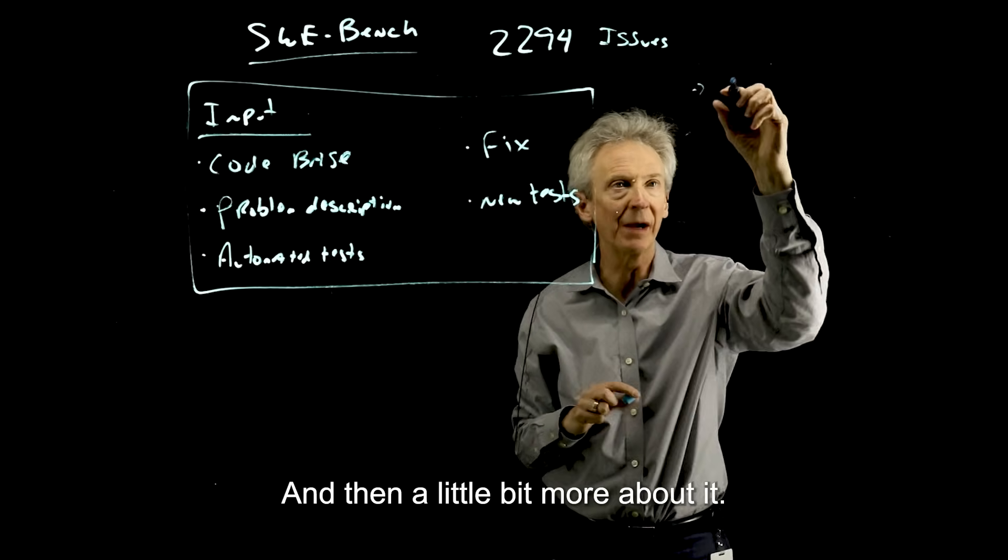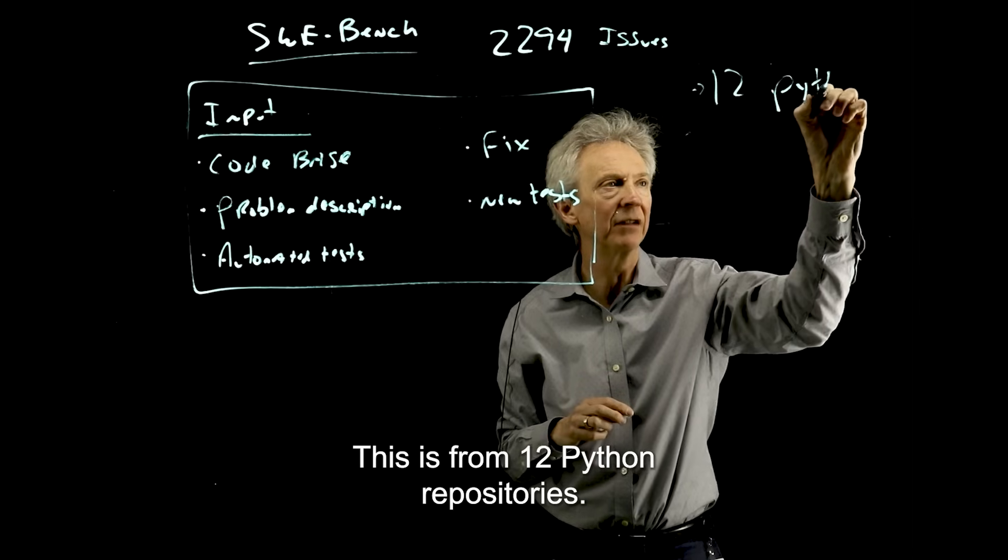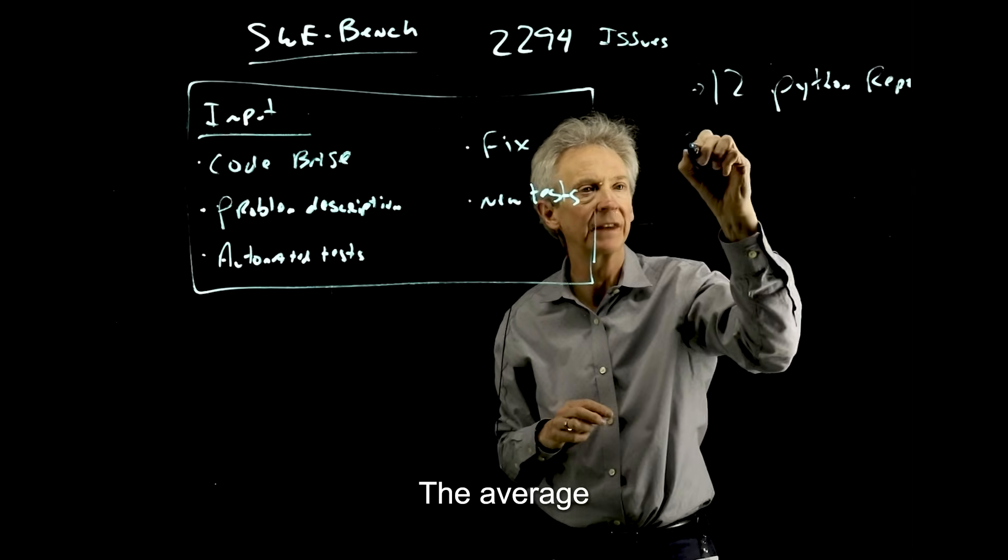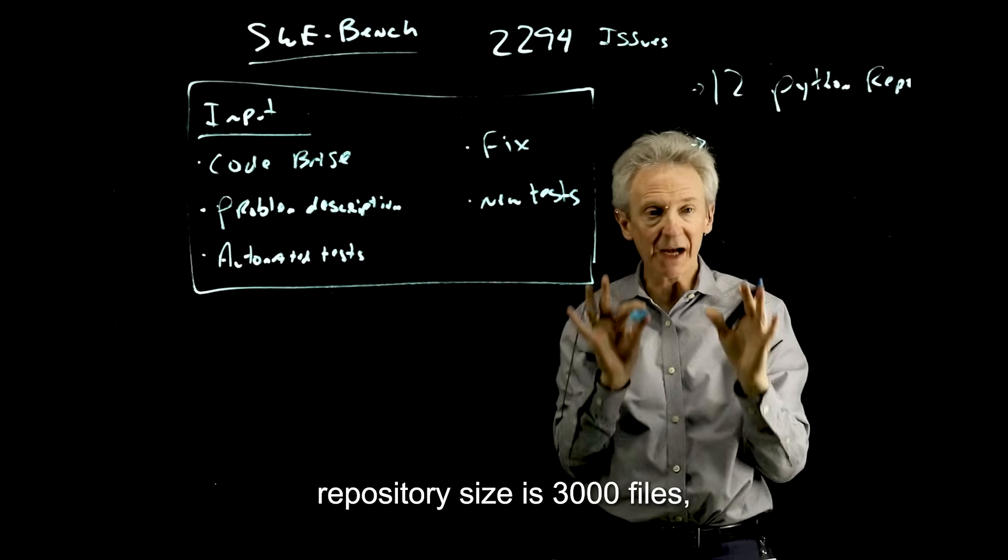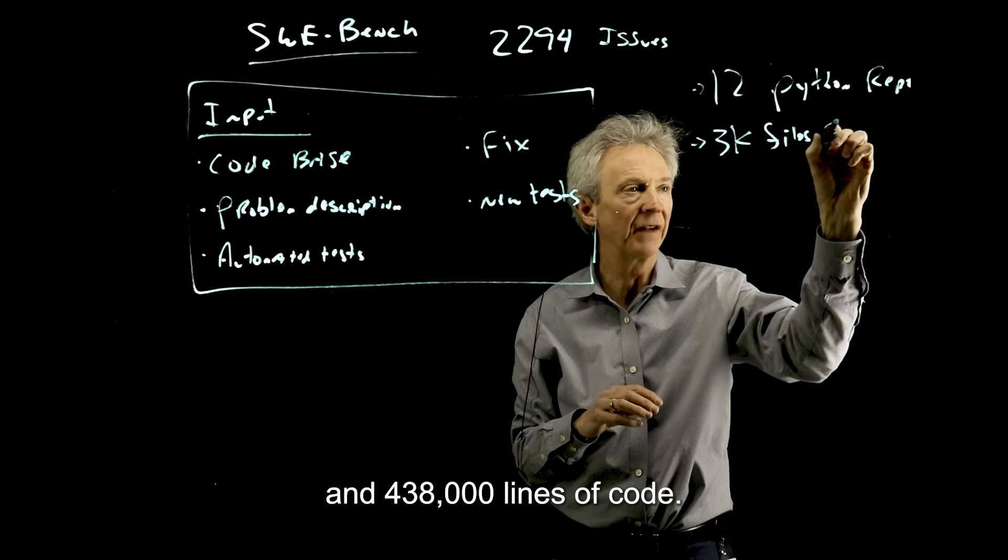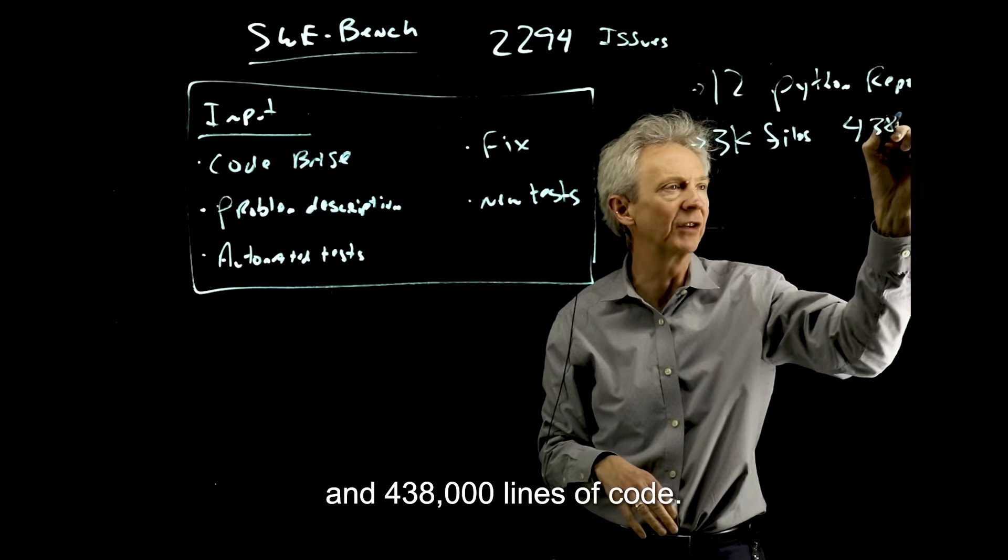A little bit more about it. This is from 12 Python repositories. The average repository size is 3,000 files and 438,000 lines of code.